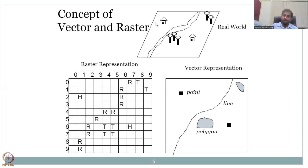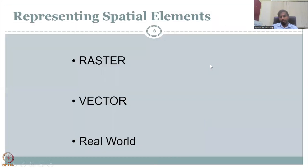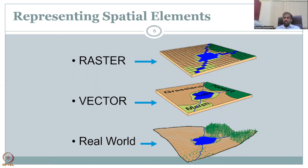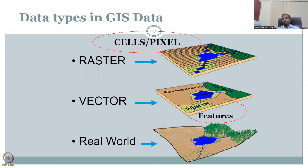This is how a real-life world is represented as a raster, and also as a vector. The real world is converted to a 2D surface. In a vector, you have lines, polygons, and points for each real-world scenario. Whereas in a raster, the entire plane is discretized into grids and each pixel takes a value. In raster, pixels are the dominant division of the data; in vectors, features are the division of the data.